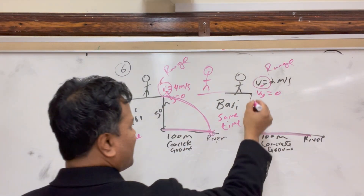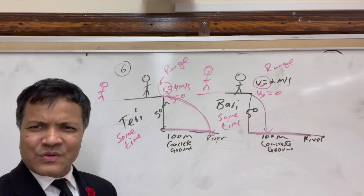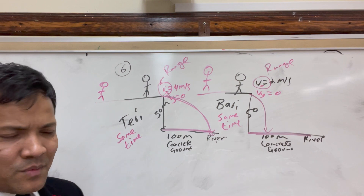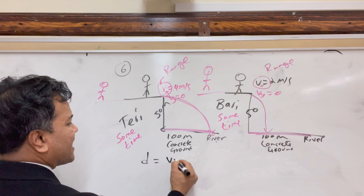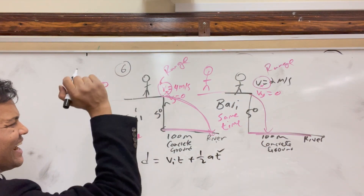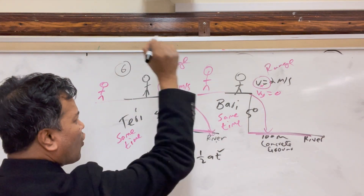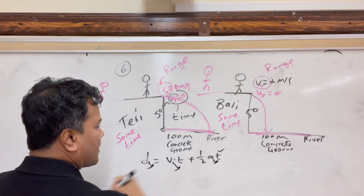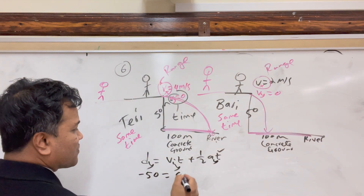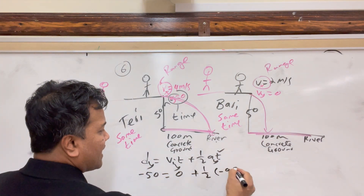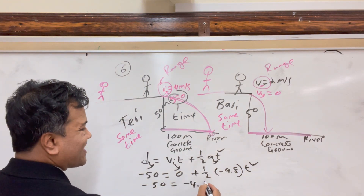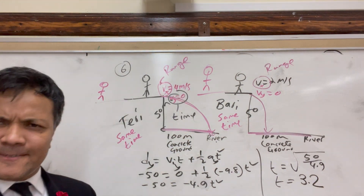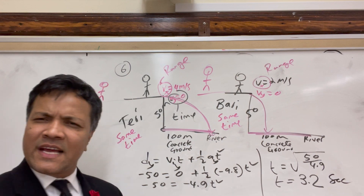Barry, with lower velocity, will land on concrete and not survive — he has no idea of physics. Now solving: using D = VI*T + ½AT², the y-direction gives negative 50 equals negative 4.9 T squared. Therefore T equals the square root of 50 over 4.9, which equals 3.2 seconds. Don't forget to write the unit 'seconds' or you will lose points.